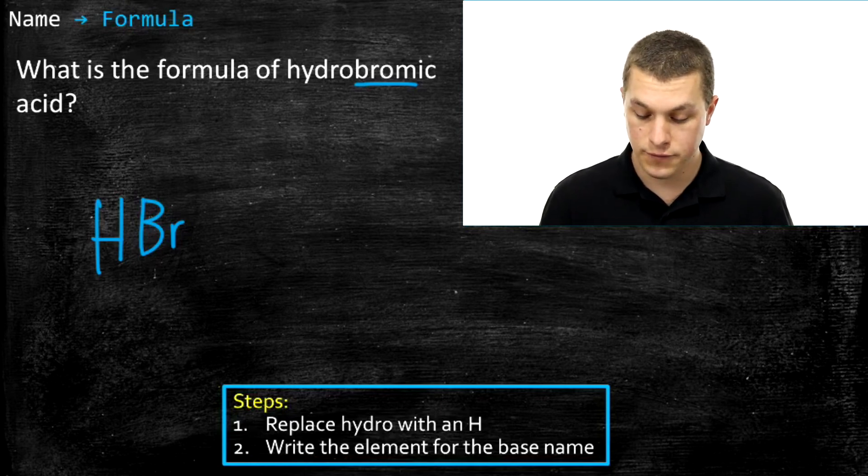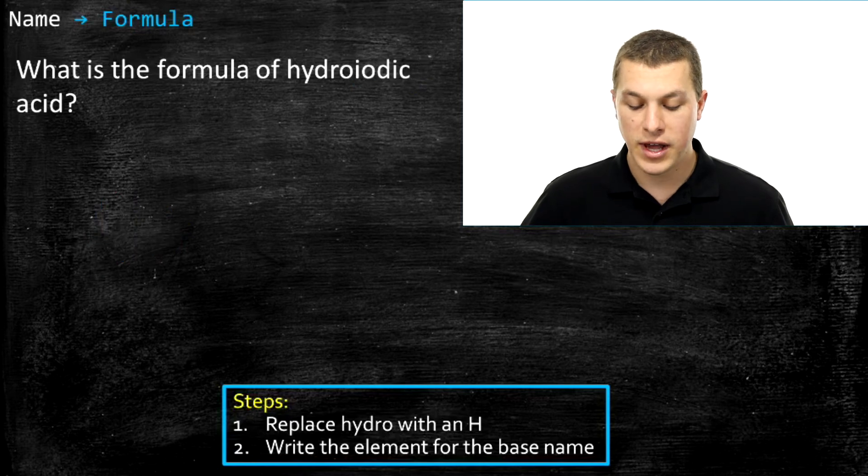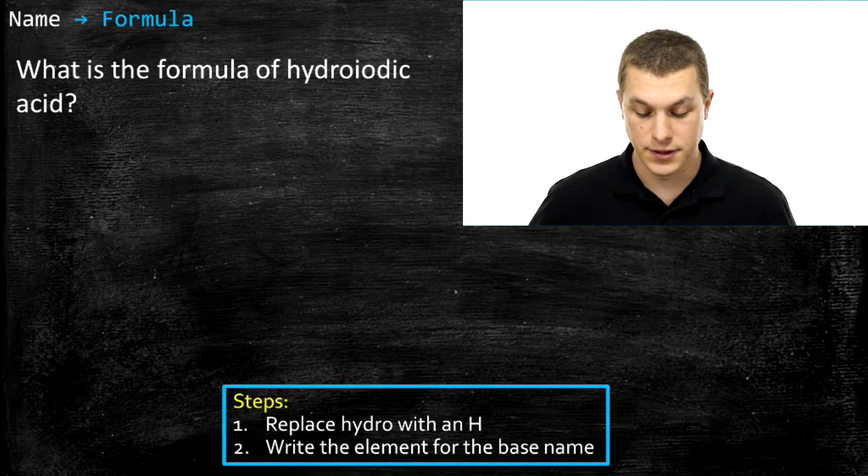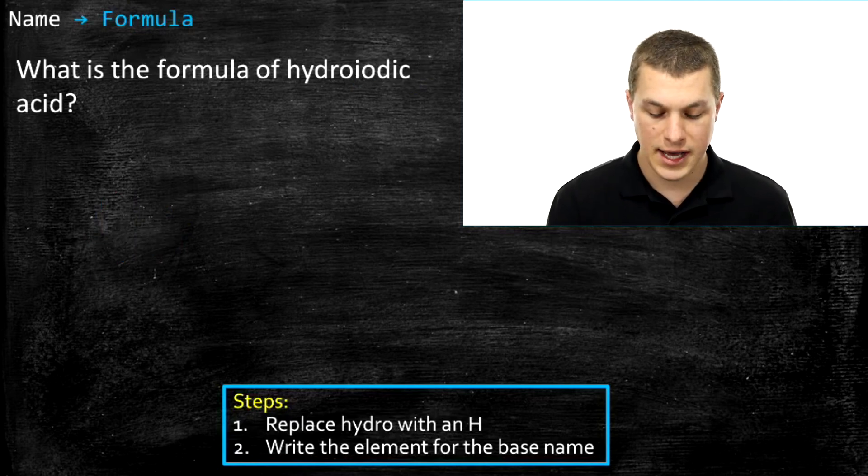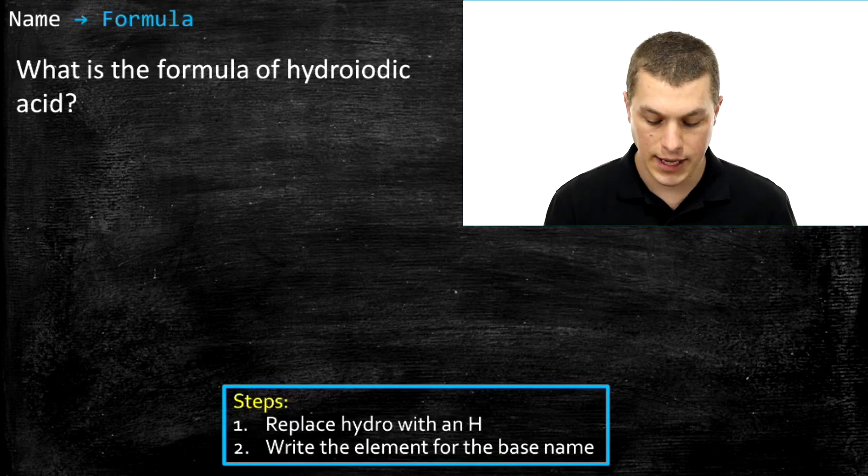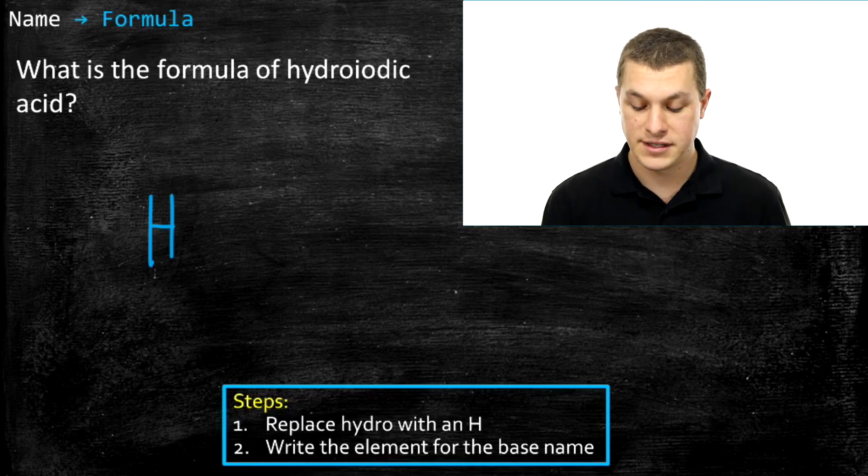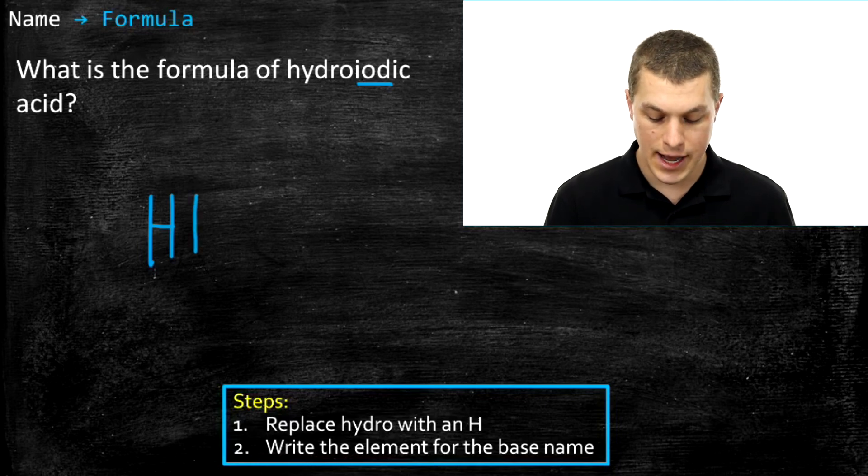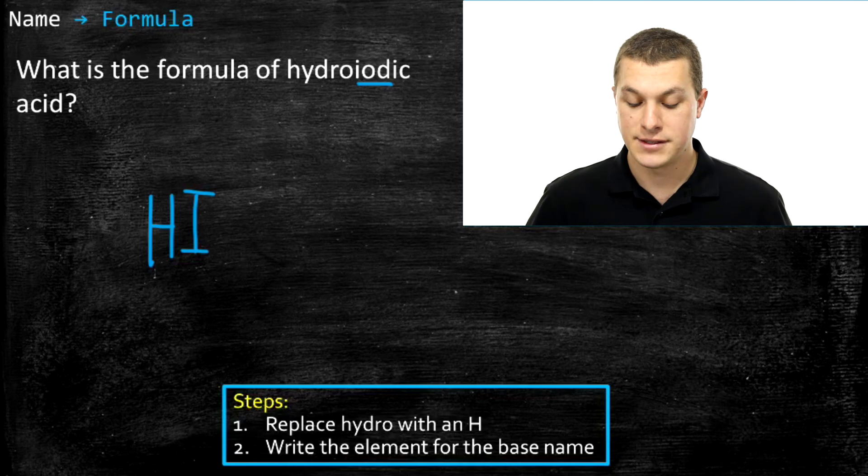Alright, one more example of going from names to formulas. Here we have hydroiotic acid. And so again we're going to replace the hydro with an H. And we're going to investigate what base name we have here. And we see iod, which turns out to be the base name for iodine. And so that means we have HI. So that is the acid we have there.